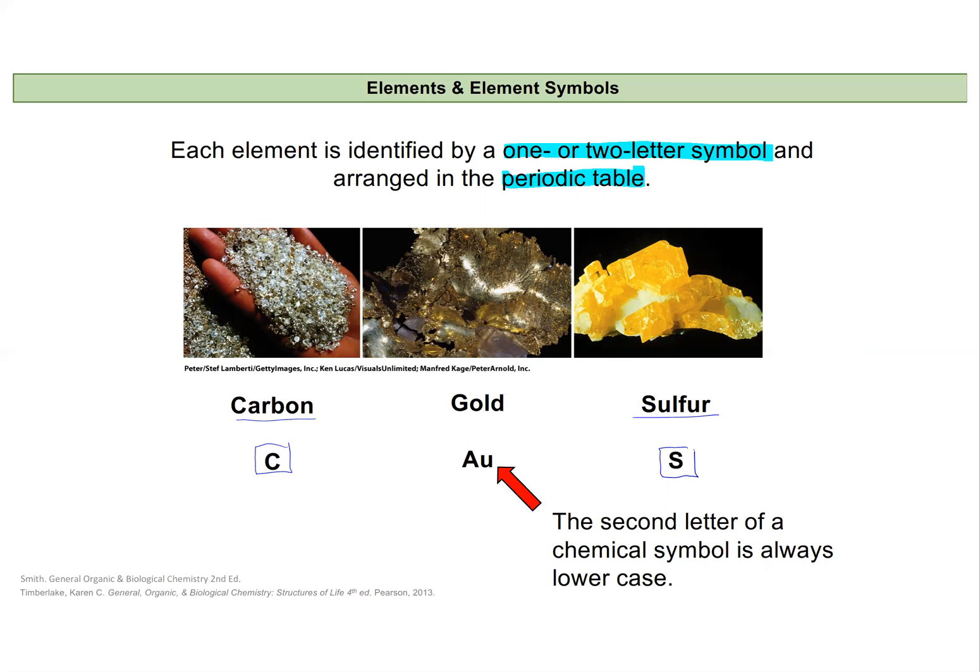However, some will make less sense because there are more elements than there are letters in the alphabet. So gold does not have an element symbol that starts with a G. Instead it's Au. And the first letter is always capitalized. And the second letter is always lowercase when we are looking at an element symbol.